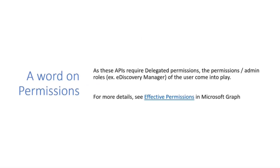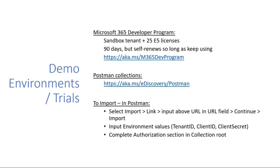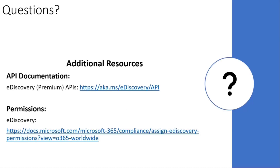On permissions — these APIs currently only support delegated permissions. We are working on application permissions. Because delegated is required, you'll need the appropriate role assigned in Purview, such as eDiscovery Manager, eDiscovery Administrator, or similar. If you're looking for a demo environment, the Microsoft 365 Developer Program is a great way to get a 90-day trial tenant. You can find the Postman collection Cameron was working with at aka.ms/eDiscovery/postman, and the API documentation at aka.ms/eDiscovery/API.